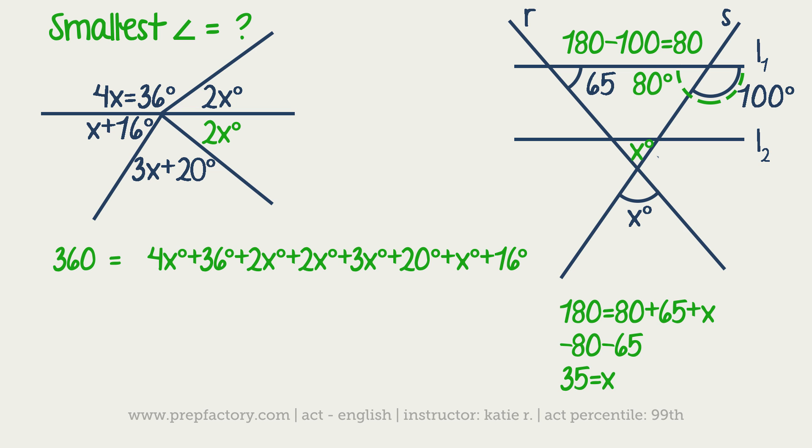First things first, you're going to want to get all the X's together and then get all the numbers together. So we've got 4X plus 2X is 6, then 8X, then 11 when we add this extra 3, and then 12. So we've got 12X degrees plus—and then we've got 36 plus 20, and then you add your 16 to that, so you've got plus 72 degrees.